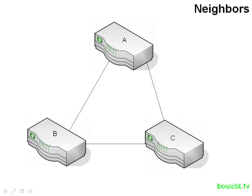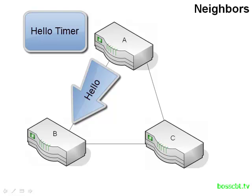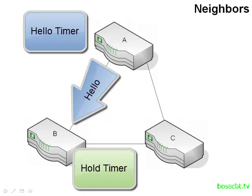Once you become neighbors, you have to maintain your neighborship by making sure the neighbor is still there and that they know you are still alive. The same concept from OSPF is present in EIGRP: hello messages are sent periodically and the hello timer dictates how often. EIGRP also has a hold timer — the time you wait to hear a hello message before declaring a neighbor as down.